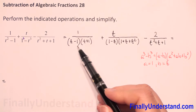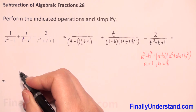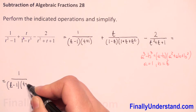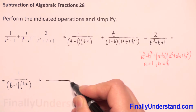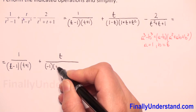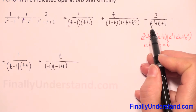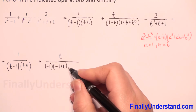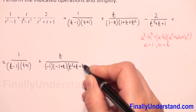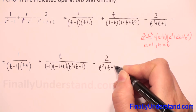Now let's look at what we can do. We have t minus one here and one minus t there, so we can factorize out the negative sign and get the same expression in parentheses. We copy t minus one times t plus one, and then we factorize negative one from the second fraction, so in parentheses it becomes t squared plus t plus one. And we have minus two over t squared plus t plus one.